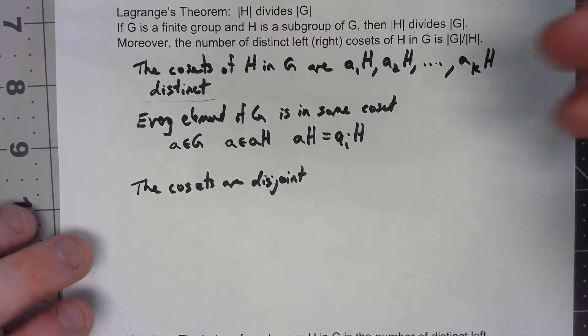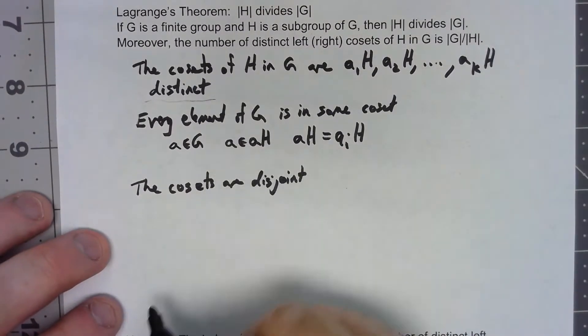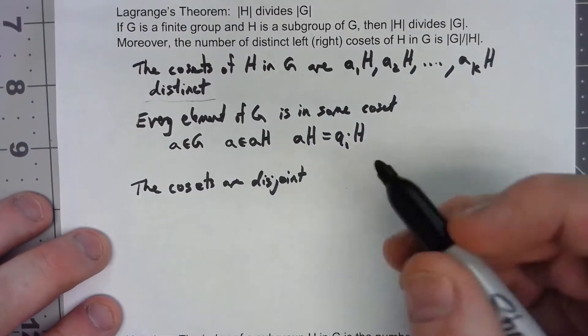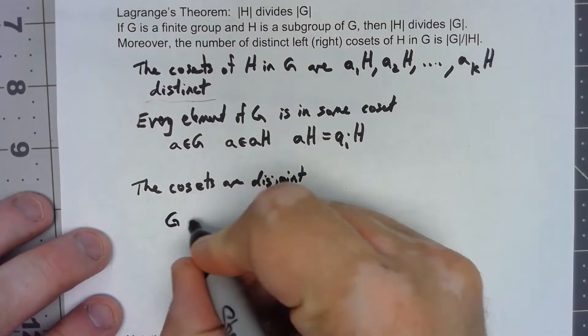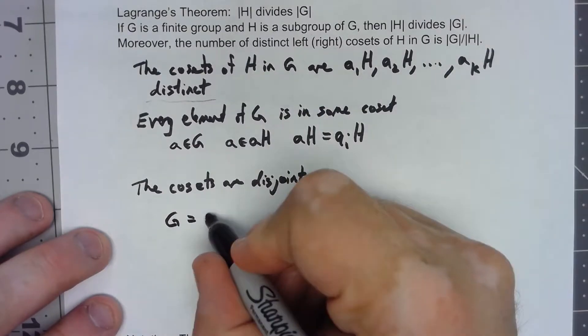Those two things together prove the theorem, because if every element of G is in some coset, that must mean that G is equal to the union of all these things.